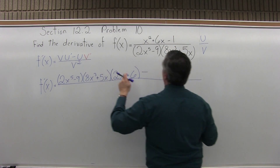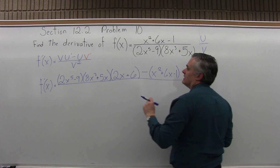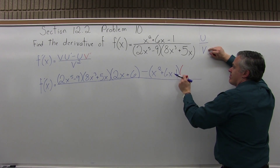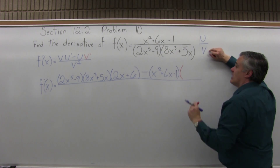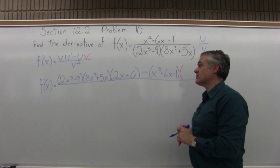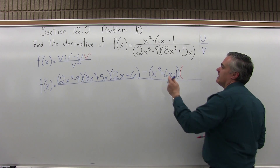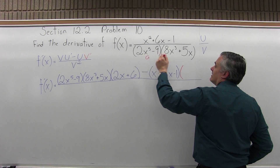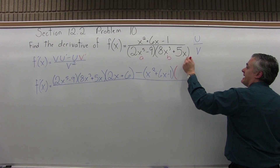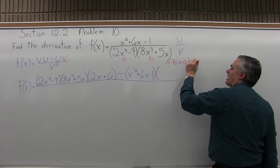The plus 6x becomes plus 6, because when you have something with just an x to the first power, its derivative is whatever the number in front of x is. The minus 1 has a derivative of 0 — whenever there's no x involved, the derivative is 0. So 2x plus 6 is the u prime part of the formula. Next is minus u with no prime — that's just the numerator x squared plus 6x minus 1 — times v prime, the derivative of the denominator, which will require the product rule.